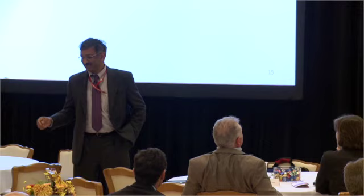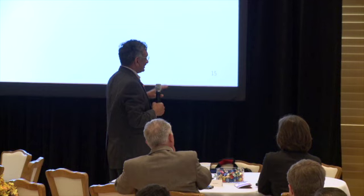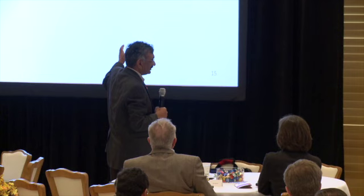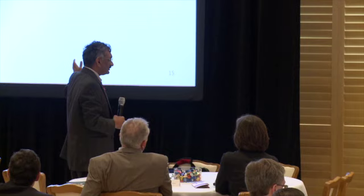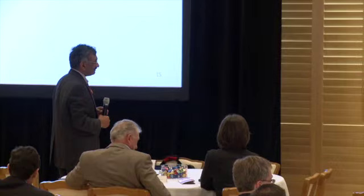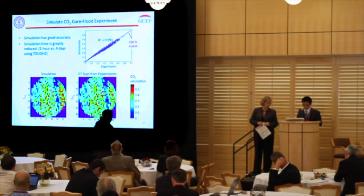Thank you, you gave a very nice talk. In the picture where you match experiments with simulations, obviously you adjusted something like permeability or entry capillary pressure at every grid block — in other words, you had a number of adjustable parameters, essentially at least one per cell, probably two per cell, to match the experiment with the theory.